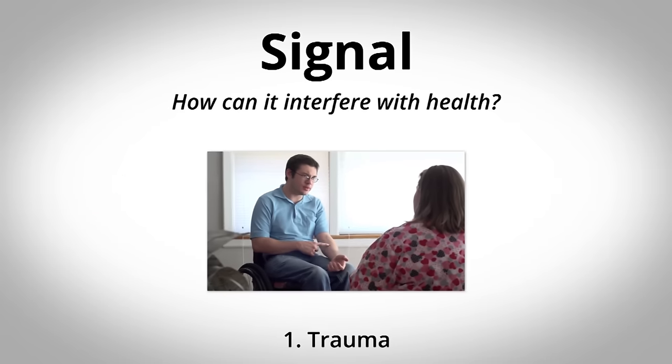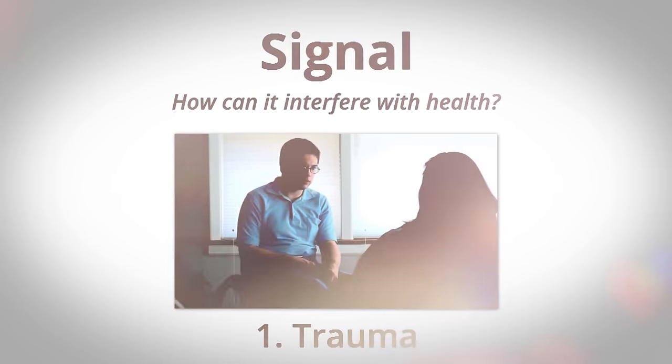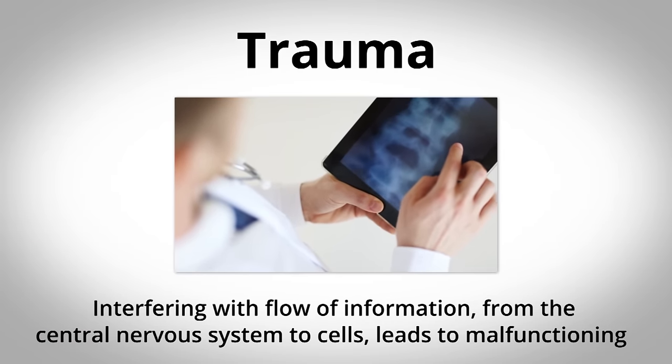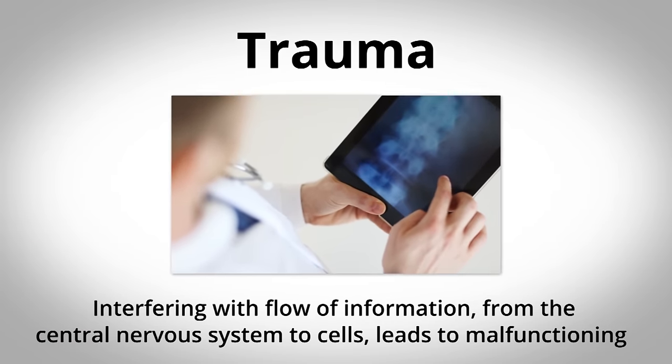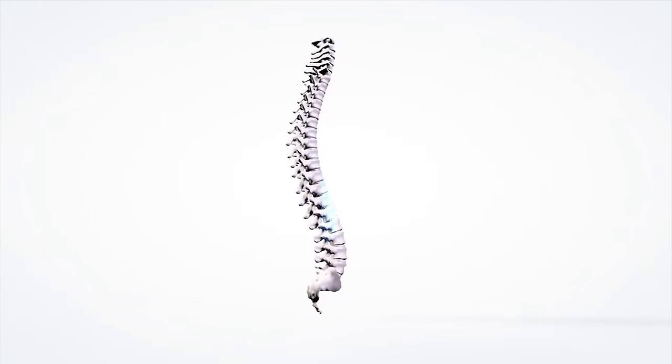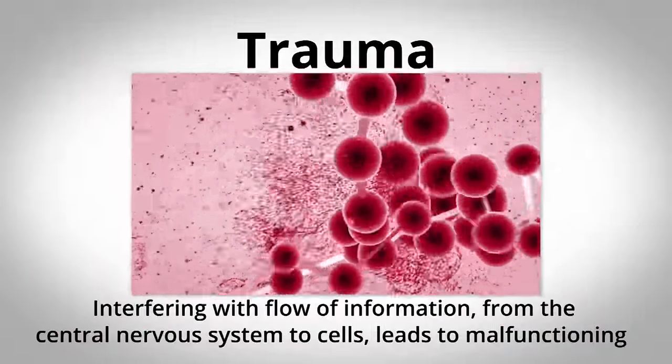Number one, if you experience trauma, let's say you're in an accident and you twist your spine and you interfere with the flow of information from the nervous system to the cells.